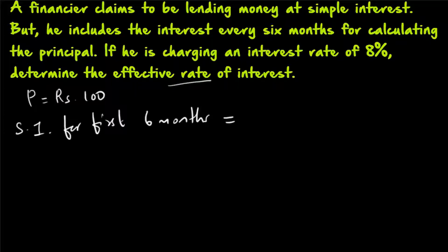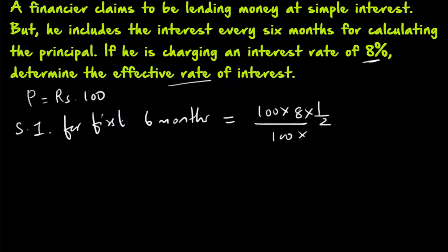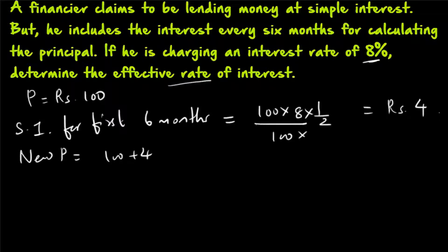For the first 6 months, simple interest is equal to PRT by 100. So P is equal to 100, R is equal to 8, and time expressed as a year is 6 by 12, which is equal to half year. Dividing by 100 gives us rupees 4. So rupees 4 is the simple interest for the first 6 months. The new principal for the next 6 months will be equal to 100 plus 4, which is equal to 104.